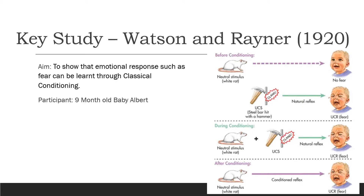The key study that links to classical conditioning is by Watson and Rayner in 1920. The aim was to show that an emotional response such as fear can be learnt through classical conditioning, and the participant was nine-month-old baby Albert. Originally, the rat acted as the neutral stimulus and gained no fear from baby Albert, but a loud noise made behind his head gained an unconditioned response of fear.